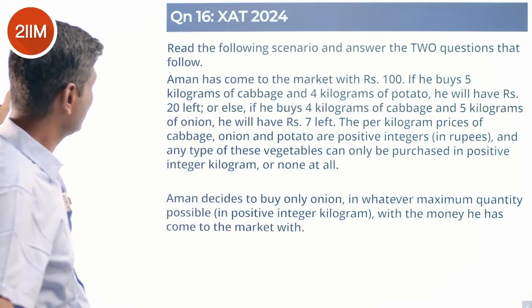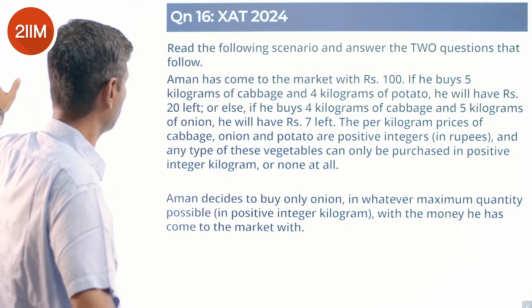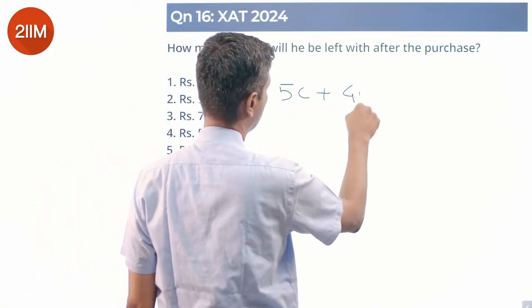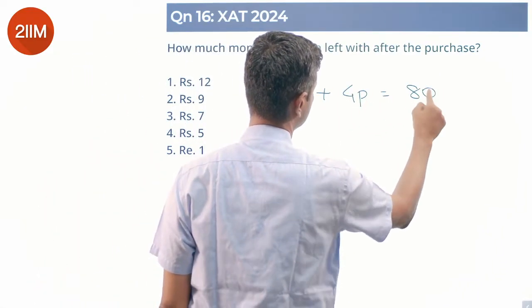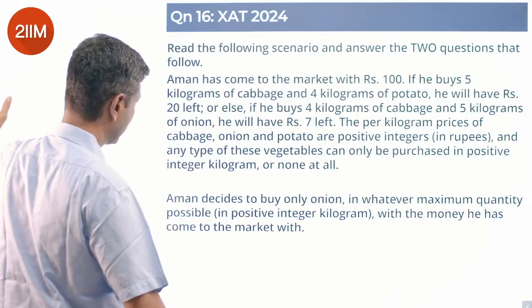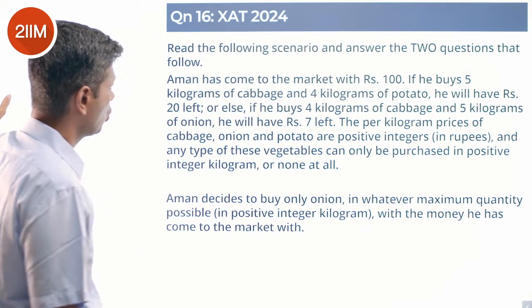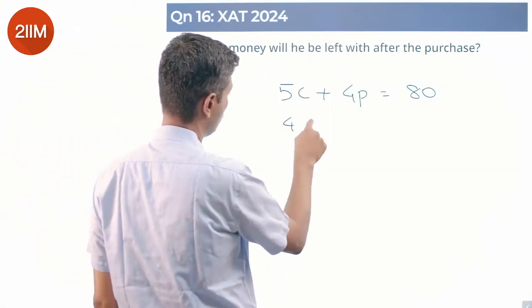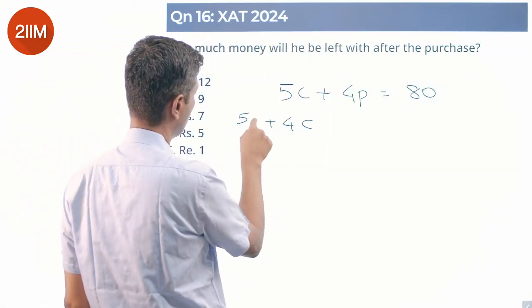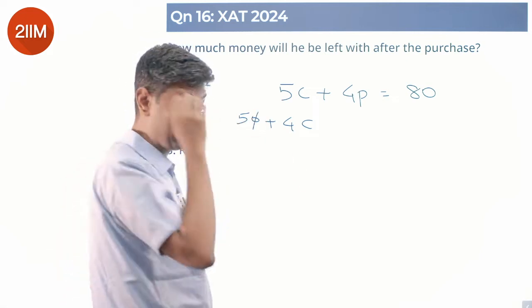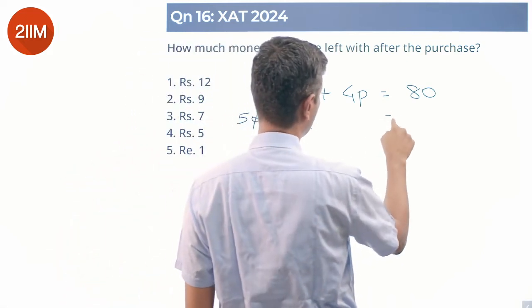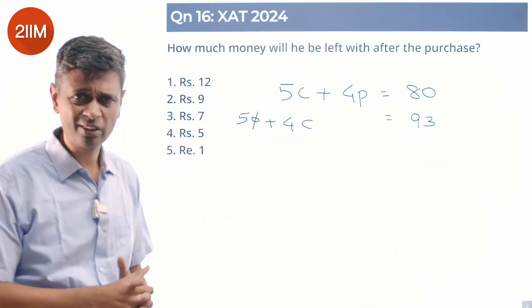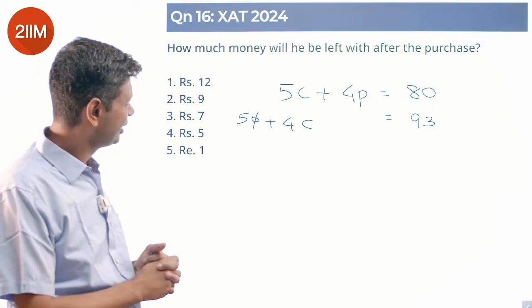5C plus 4P equals 80. Second one: 4C plus 5O equals 93, when C is an integer, P is an integer, all of that. Could find lovely.